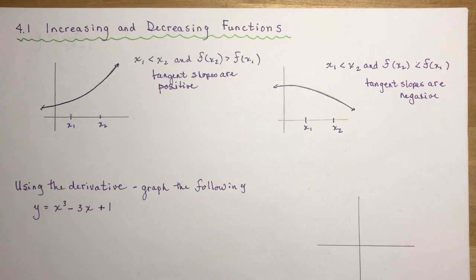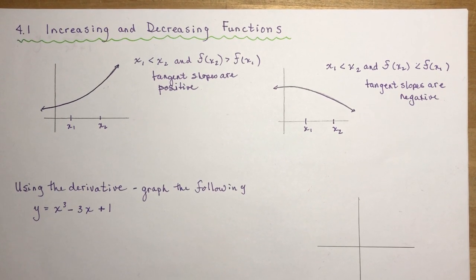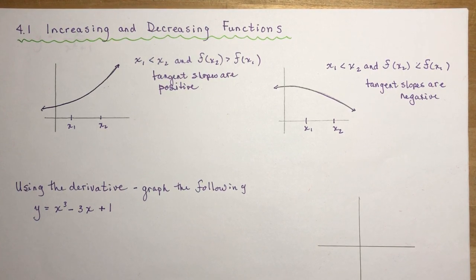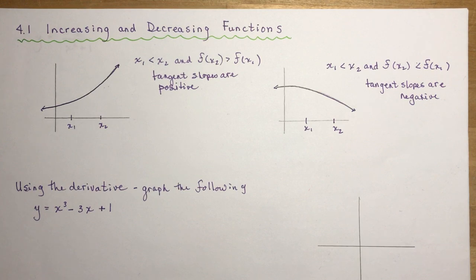Chapter 4 deals with curve sketching, and section 4.1 talks about increasing and decreasing functions. We're going to use the derivative to help sketch functions and find maximum values by setting the first derivative equal to zero.